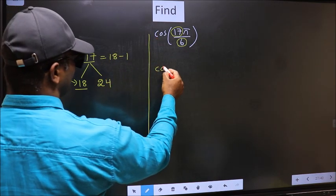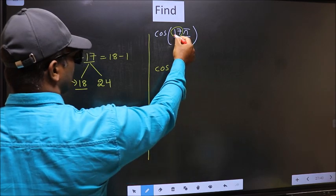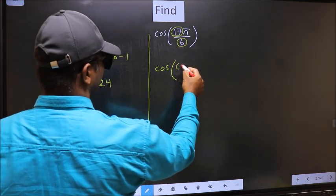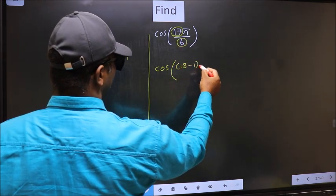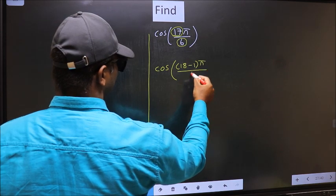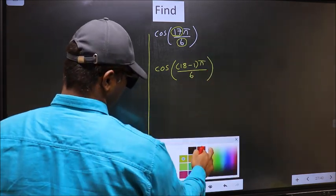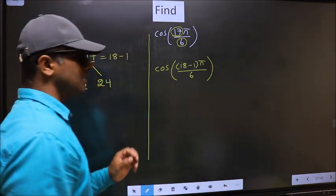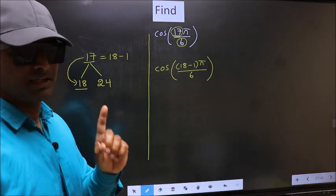So this will become cos. In place of 17, now we write 18 minus 1, π by 6. This is your step 1.